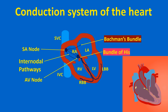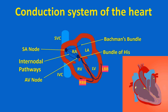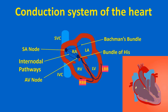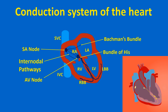In the AV node, there is a short delay for impulse transmission, after which it reaches the bundle of His for onward conduction to the ventricles. The bundle of His has two divisions — right and left bundle branches — meant for the two ventricles. The left bundle branch has two subdivisions — anterior and posterior — and sometimes a third septal branch. These subdivisions are known as fascicles.